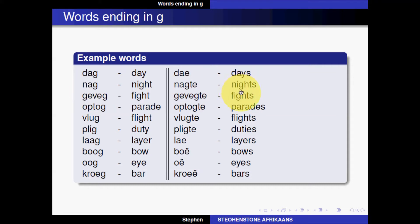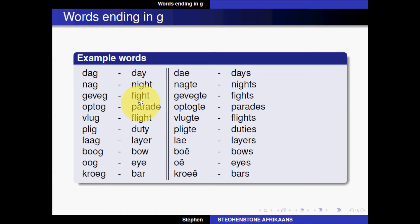The next word is 'night' and the Afrikaans word is 'nag.' The plural 'nights' in Afrikaans is 'nagte.' So the word for day is sort of an exception as far as the common words go — nag, nagte. The next word is 'fight'; the Afrikaans word is 'geveg,' and the plural 'fights' in Afrikaans is 'gevegte.'